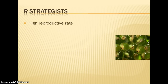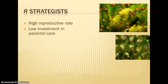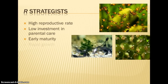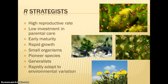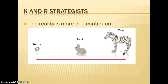R-strategists have a very high reproductive rate — usually insects, or like cane toads that lay 40,000 eggs at a time. They don't take care of their young; once the eggs hatch, the young are on their own. They mature very quickly, often within days, grow very quickly, and tend to be smaller organisms. They are pioneer species, meaning they are the first to appear after a disturbance — weeds would be an example in flora. They are generalists, don't have a specialist role, and can quickly adapt to variations — which is why species like cane toads tend to do very well. They grow exponentially, showing the J-shaped curve.